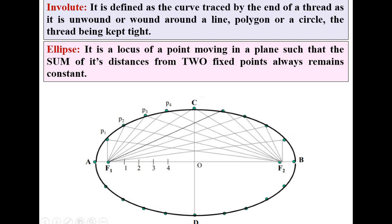So if you look at the P1, then what is written in this definition? It is the locus of a point moving in a plane such that the sum of its distances from these two fixed points, F1 and F2, means P1F1 plus P1F2 must be equal to P2F1 plus P2F2 must be equal to P3F1 plus P3F2 must be equal to P4F1 plus P4F2, like that.